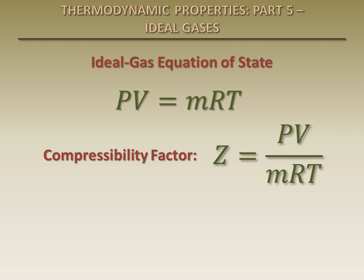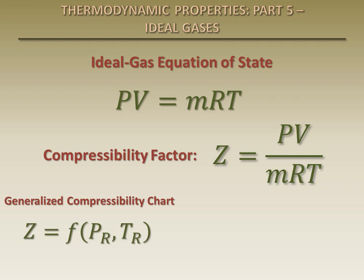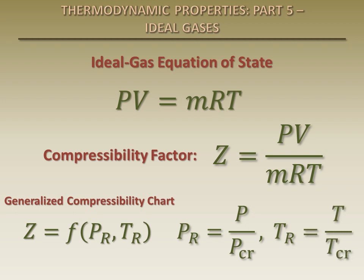The closer the compressibility factor is to 1, the closer the gas approximates the behavior of an ideal gas. The compressibility factor for any gas at a given state can be found in the generalized compressibility chart as a function of the reduced pressure, PR, and the reduced temperature, TR. The reduced pressure is the actual pressure of the gas divided by the critical pressure, and the reduced temperature is the actual temperature of the gas divided by the critical temperature.